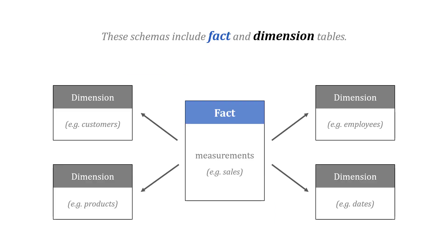Each of these schemas — the star and snowflake schemas — include what are called fact and dimension tables. A fact table is sort of the heart of our design, the heart of our data warehouse. They're measurements, things that we can quantify like sales. And then around the fact, we have supporting dimensions, which basically provide additional context or information.